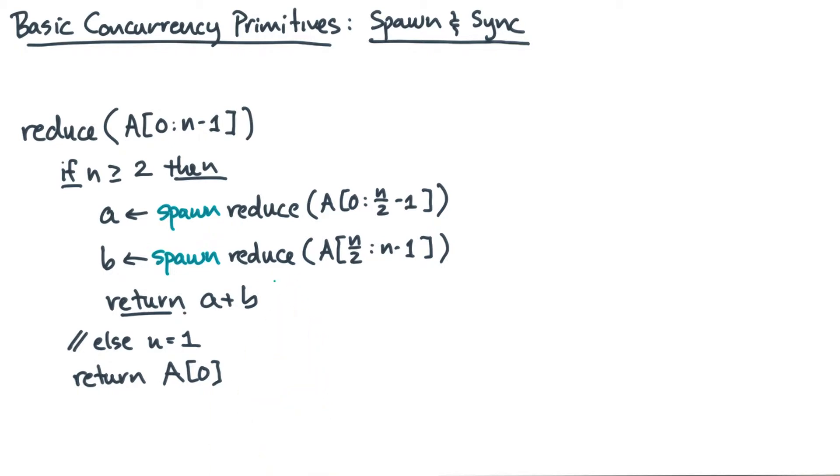Now, the spawn keyword is a signal to either the compiler or the runtime system that the target is an independent unit of work. By inserting the spawn, you're effectively saying that the target may be executed asynchronously from the caller any time a processor is available.